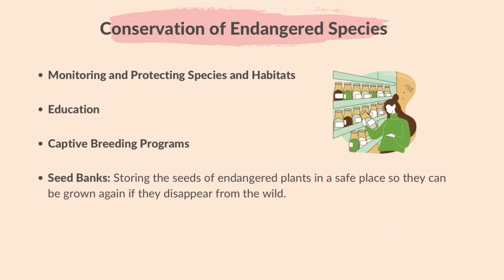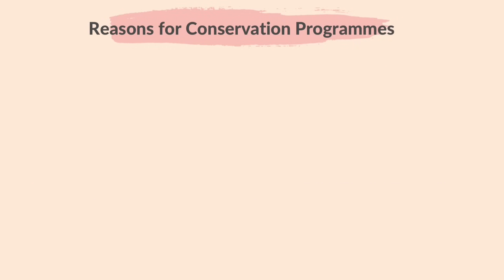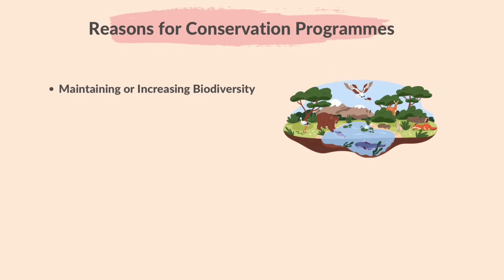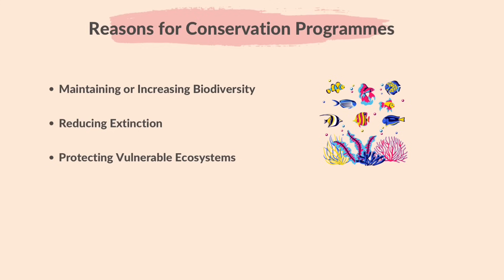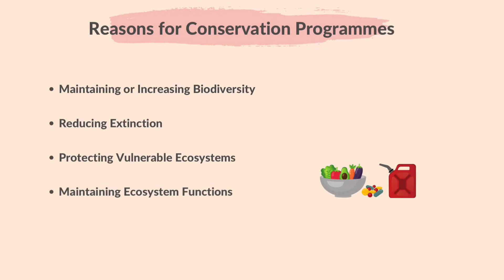Seed banks — storing the seeds of endangered plants in a safe place so they can be grown again if they disappear from the wild. The reasons for having conservation programs are: maintaining or increasing biodiversity, as conservation programs help keep many different types of plants and animals alive, which is important for nature's balance; reducing extinction by preventing animals and plants from disappearing forever; protecting vulnerable ecosystems; and maintaining ecosystem functions such as recycling nutrients and providing resources like food, drugs, fuel and genes.